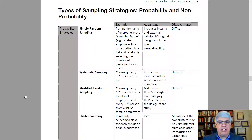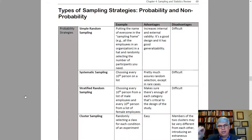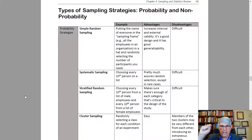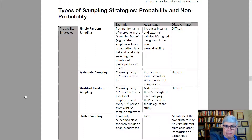Do educated people get divorced less or more often than less educated people? For studies like this, having a probability strategy isn't nearly as important. We're basically getting data from people, finding out their educational level and marriage status, and seeing if there's a relationship. We might oversample divorced or non-divorced people, but that's okay because we're looking at the relationship. So even though non-probability strategies sound like a bad idea, they work out fine most of the time.